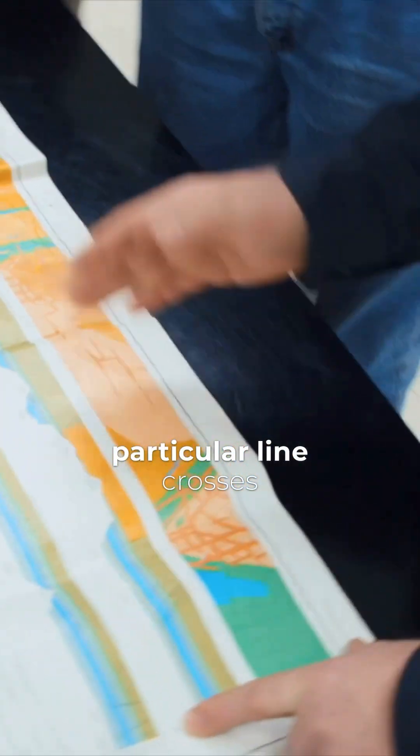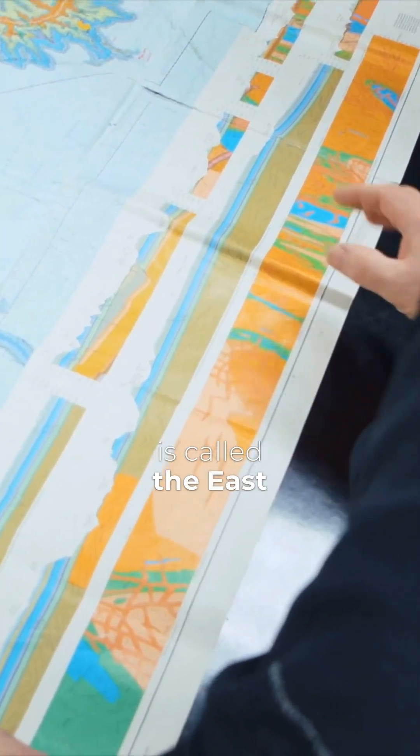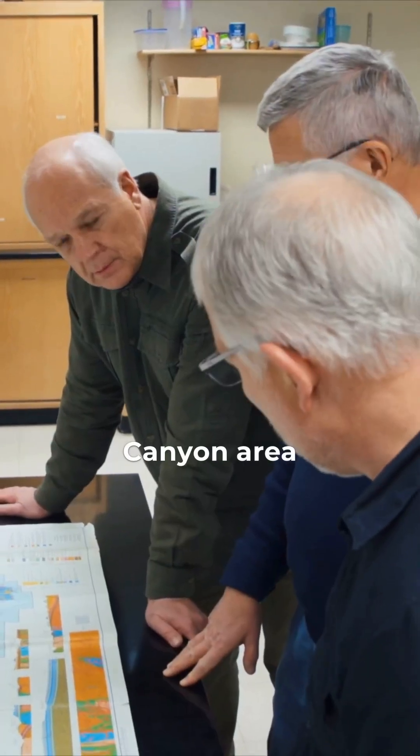And notice that this particular line crosses the structure that is called the East Kaibab monocline and that's the fault and fold partly associated with a carbon canyon area.